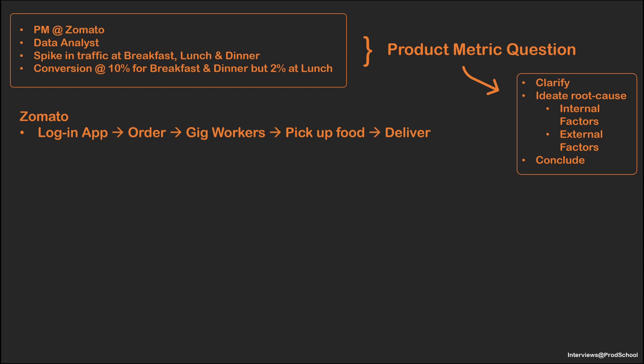I have a few clarifying questions. One, what is the exact meaning of conversion? Does it mean number of purchases divided by number of app searches, or number of purchases divided by number of items added to cart? For our discussion today, you can assume conversion equals number of purchases divided by number of app searches. So it's number of purchases divided by number of app searches.